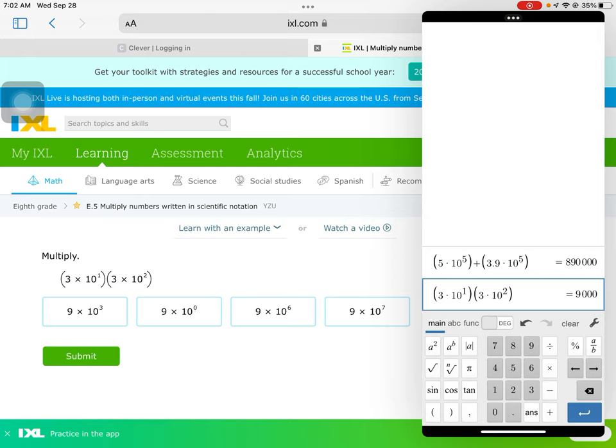am I going to move that decimal point? From all the way at the left, moving it before those three zeros—that means my power of ten is three. So the correct answer choice is nine times ten to the third power.